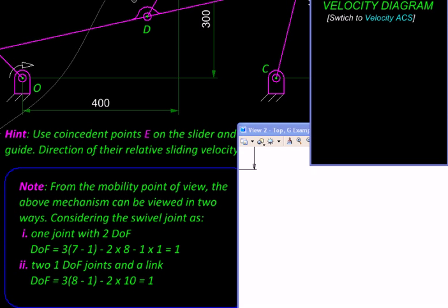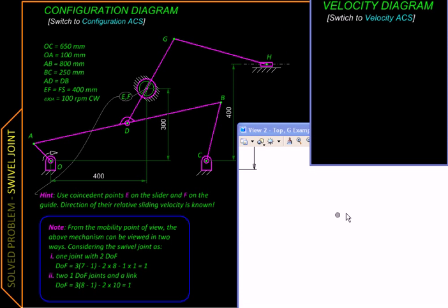We start the velocity diagram as usual by plotting the fixed points. Here there is o, c, and we have taken one extra point.